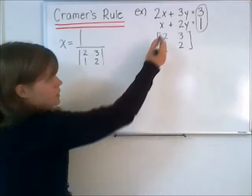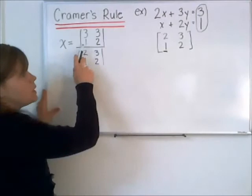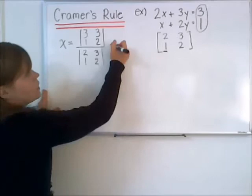So the right side of our system of equations. Instead of putting 2, 1, we're going to put 3, 1, and then you leave your y column the same. The only column you're replacing is that column corresponding to the variable you're trying to find.